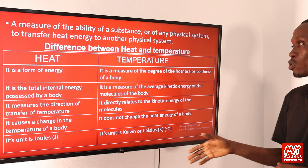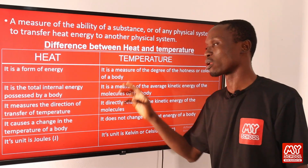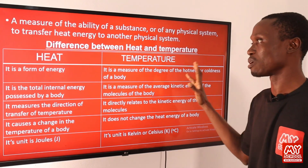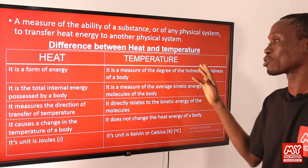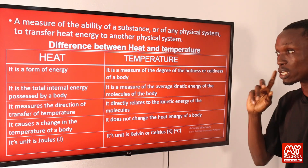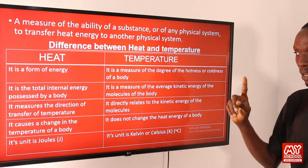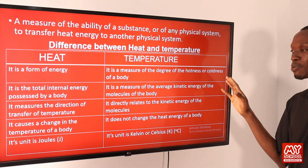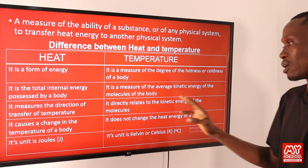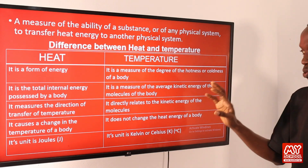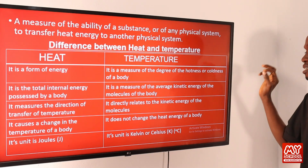Let's look at the differences between heat and temperature. Number one: heat is a form of energy, while temperature is a measure of the degree of hotness or coldness of a body. Number two: heat is the total internal energy possessed by a body, whereas temperature is a measure of the average kinetic energy of the molecules of a body. Number three: heat measures the direction of transfer of energy, while temperature is directly related to the kinetic energy of the molecules of a body.